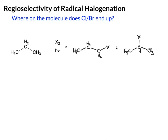Now if we think about this in terms of the halogen that we're using, let's compare chlorine and bromine. If you use chlorine, you end up getting a mixture of products. If you use bromine as your halogen, the product on the right is the major product and the product on the left is a minor product. So what this tells us is that the chlorination is non-selective — it gives us a mixture of products. The bromination is selective, getting the halogen on the more substituted carbon. Here we end up with a primary halide, and here is a secondary halide.